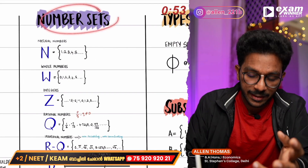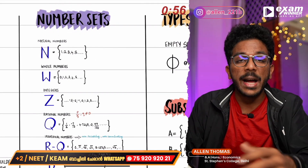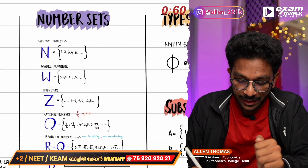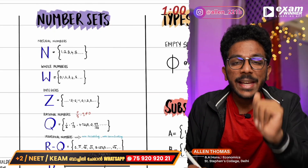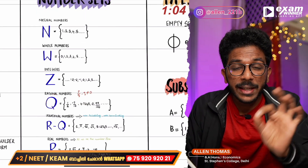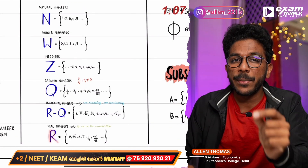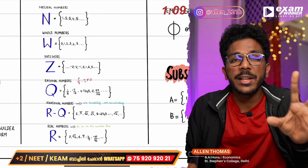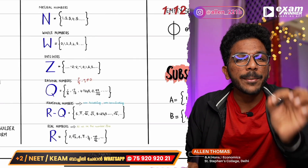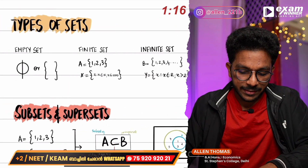You will find the number sets. The whole numbers is W, integers is Z, rational numbers is Q, and real numbers is R. N, W, Z are very important. R is the most important. R, N, W, Z — Z is the set of all integers, R is the set of all real numbers.